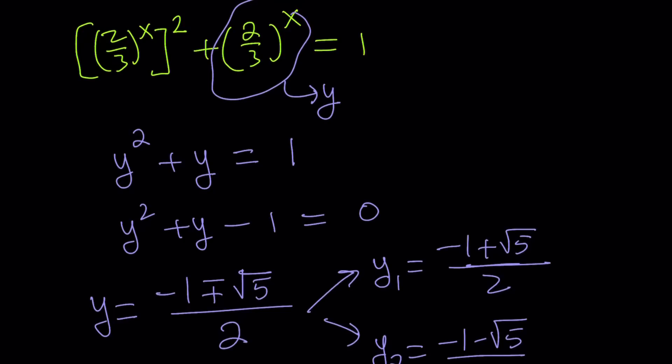2 over 3 to the power x is always a positive quantity. Therefore, it can't be negative, and it can't even be 0. It can only approach 0 if x approaches infinity, but that's a limit and that's something else. So our y value needs to be positive.